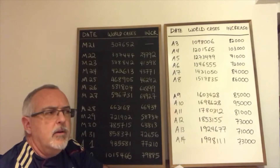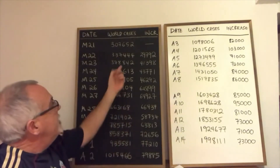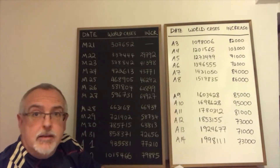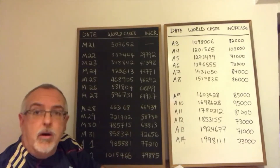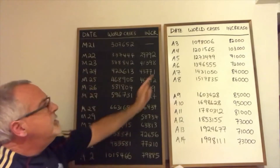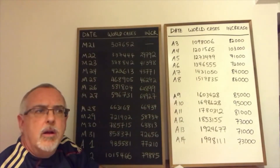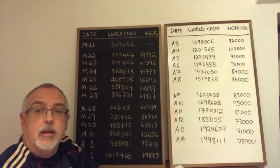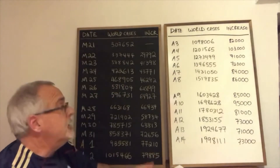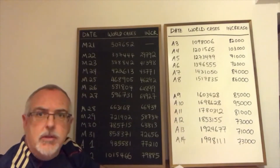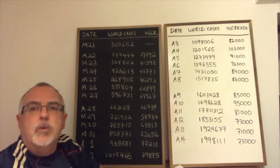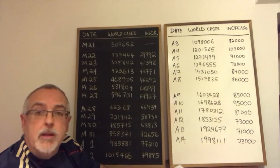I read another article where a scientist pointed out that the number of confirmed cases must be far short of the real numbers, because so many people who might have the virus are unable to get tested. That scientist suggested that 5% of the world population might already have had this virus. If that estimate is correct, the numbers on worldometers.info are only 1/170th of the real numbers in the human population — meaning the actual number of people who caught the virus is 170 times the confirmed cases being reported. This could be good news, because if far more people are actually sick, then the percentage dying from it would be a much smaller percentage.